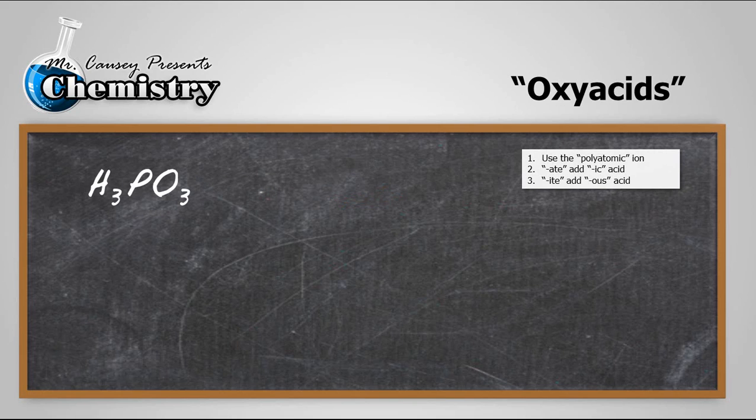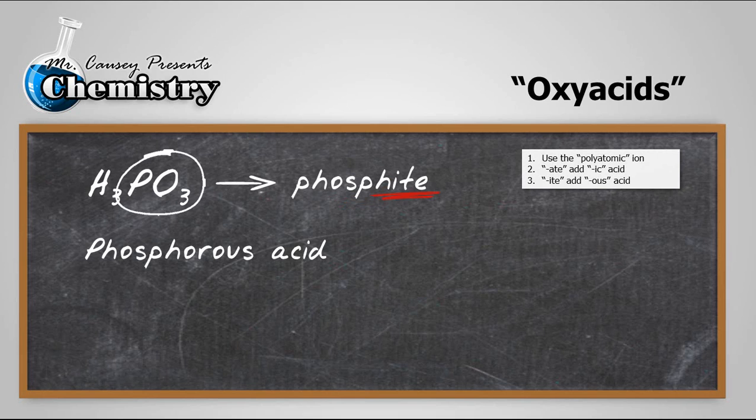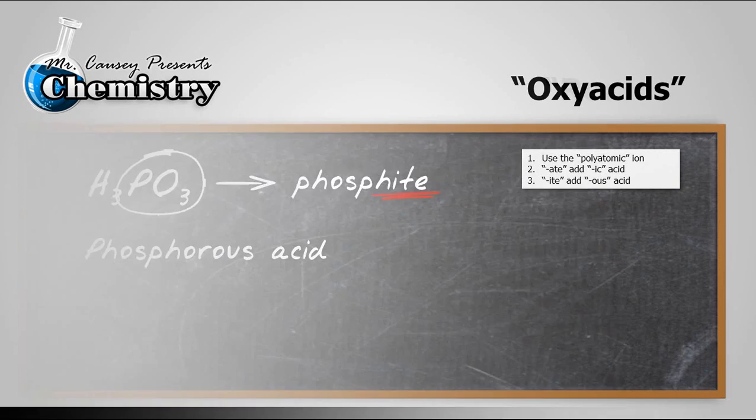All right let's look at H3PO3. Look at the polyatomic ion. And that is phosphite. And you can find that on your polyatomic ion sheet. And of course that means add O-U-S. So I-T-E-O-U-S. Phosphorous acid. It's really just that easy.